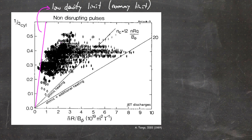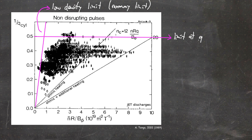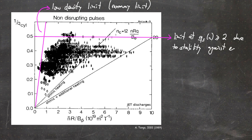This is why this limit is also sometimes called the runaway limit — because what you're basically doing is accelerating a few electrons and these electrons are getting faster and faster, so to say they are running away, getting faster and faster without delivering their energy to the plasma. Then we have a limit at 1/q equal to 0.5, and that limit is against external kink instabilities.